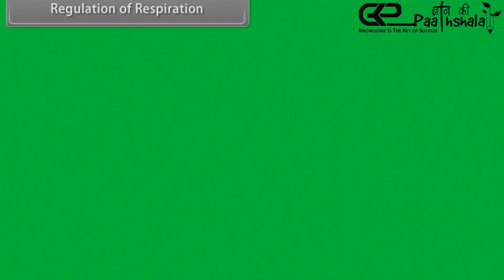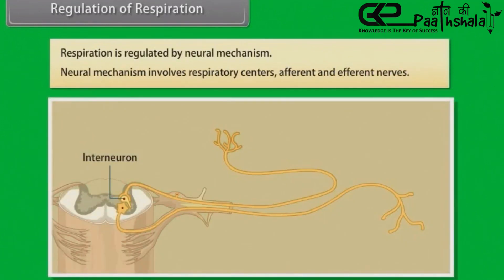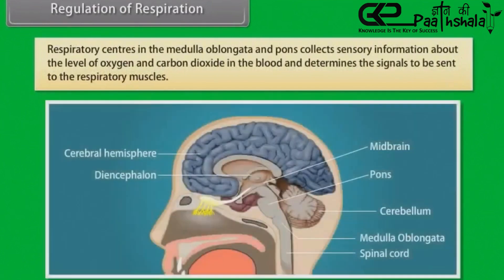Regulation of Respiration. Respiration is regulated by neural mechanism. Neural mechanism involves respiratory centers, afferent and efferent nerves. Respiratory centers in the medulla oblongata and pons collect sensory information about the levels of oxygen and carbon dioxide in the blood and determine the signals to be sent to the respiratory muscles.